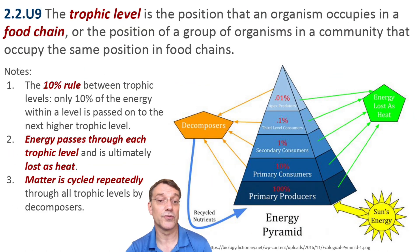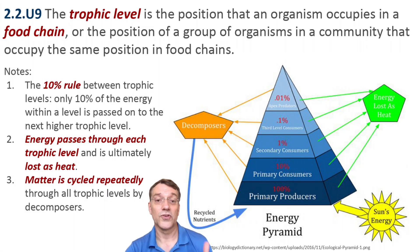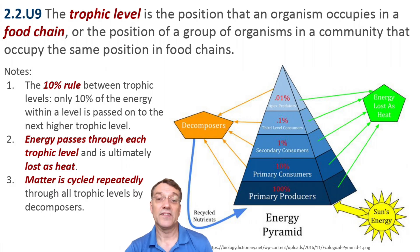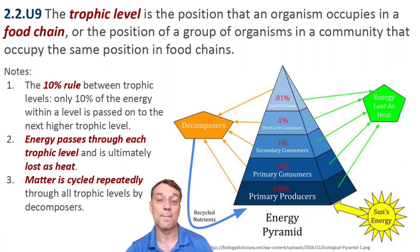The primary producers form the first level, followed by primary consumers — the herbivores. The herbivores are followed by secondary consumers, or omnivores, who eat both herbivores and producers. Then you have secondary and tertiary consumers, which tend to be carnivores that eat herbivores. At each trophic level, decomposers break down organic matter from all trophic levels, recycling nutrients back into the system and making them available for producers.